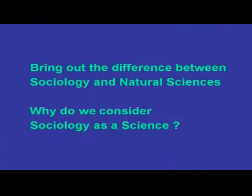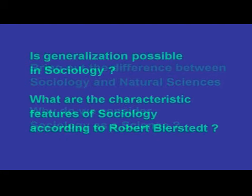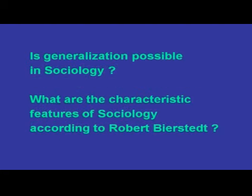So far, we have explained the subject matter of sociology, some basic concepts in sociology, and why we can consider sociology as a science. For better understanding, here are a few review questions: 1. Bring out the difference between sociology and natural sciences. 2. Why do we consider sociology as a science? 3. Is generalization possible in sociology? 4. What are the characteristic features of sociology according to Robert Bierstadt?